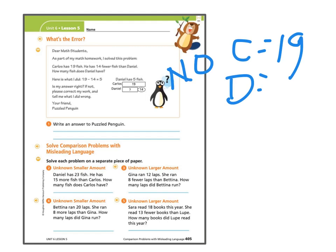The Puzzle Penguin said, well Daniel has five fish. But knowing that Puzzle Penguin is wrong, if Daniel has five, is 19 fourteen fewer? Nope. So you have to go back and solve your equation the correct way.